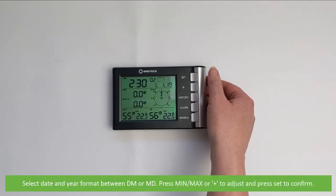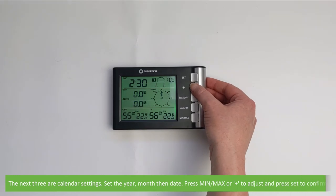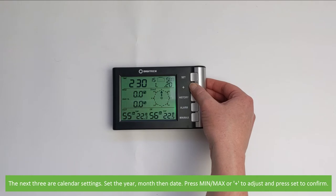Select the date and month format between day month or month day. Press min max or plus to adjust and Set to confirm. The next three are calendar settings. Set the year, month, then the date. For all three options press min max or plus to adjust and Set to confirm.